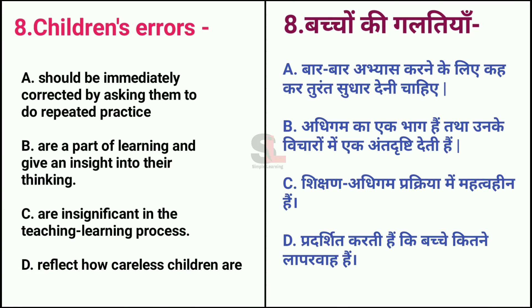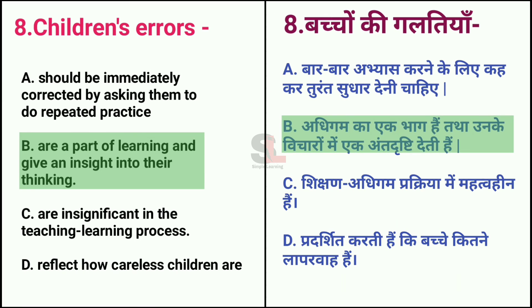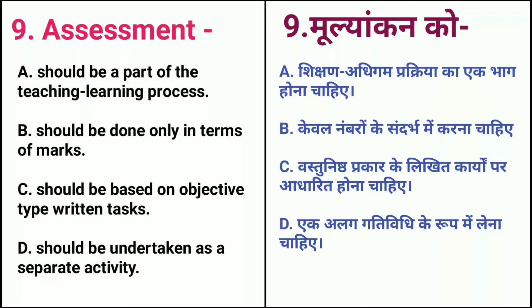Question No. 8. Children's errors should be: immediately corrected by asking them to do repeated practice; or are a part of learning and give an insight into their thinking; are insignificant in the teaching-learning process; or reflect how careless children are. The answer is Option B: Children's errors are a part of learning and give an insight into their thinking.